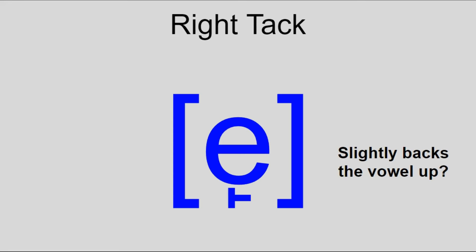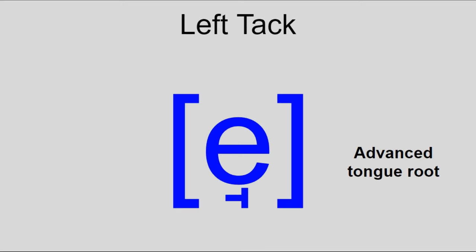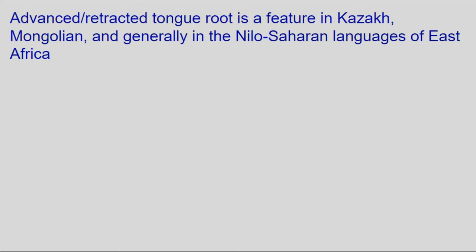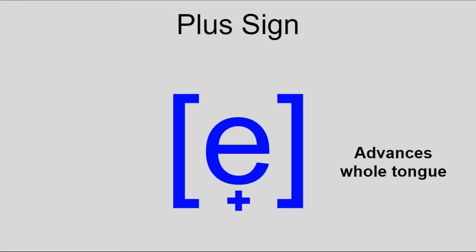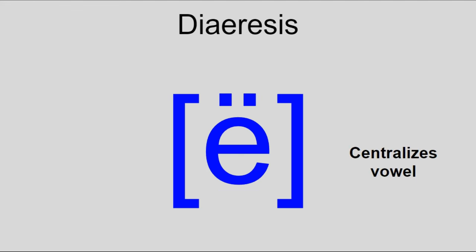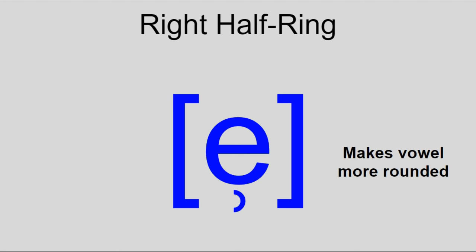The left and right tacks indicate advanced and retracted tongue root respectively — the tongue root is either advanced or retracted, and this is a distinction some languages have. These symbols can also be used for consonants if applicable. Similarly, a plus sign below the letter means the whole tongue is advanced, while a macron (basically a minus sign) means the whole tongue is retracted. You can centralize a vowel by adding either a diaeresis or a miniature X above the letter. And finally, a right half-ring under the vowel indicates more rounding, and a left half-ring indicates less rounding.